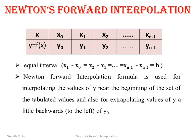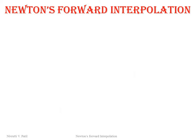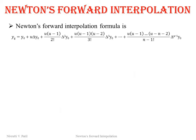Newton's forward interpolation method is applicable only when x values are equispaced and we need to find values at the beginning of the table. The Newton's forward interpolation polynomial is: yg = y0 + u·Δy0 + [u(u−1)/2!]·Δ²y0 + [u(u−1)(u−2)/3!]·Δ³y0, and so on up to the Δ^(n−1) term.